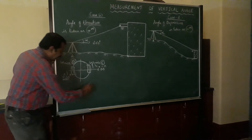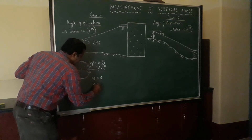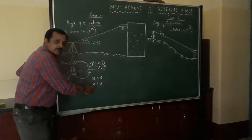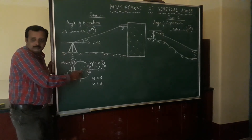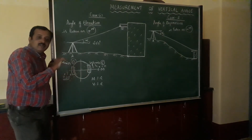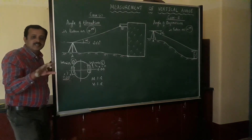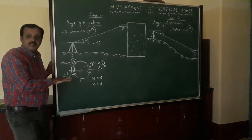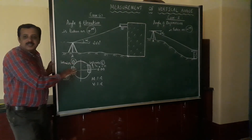Take the main scale reading and the Vernier scale reading where the Vernier scale coincides with the main scale. Record this in tabular form. Read Vernier C and Vernier D and take the average of these two readings. There is no repetition here — we just take the reading once. This is how the vertical angle is measured.